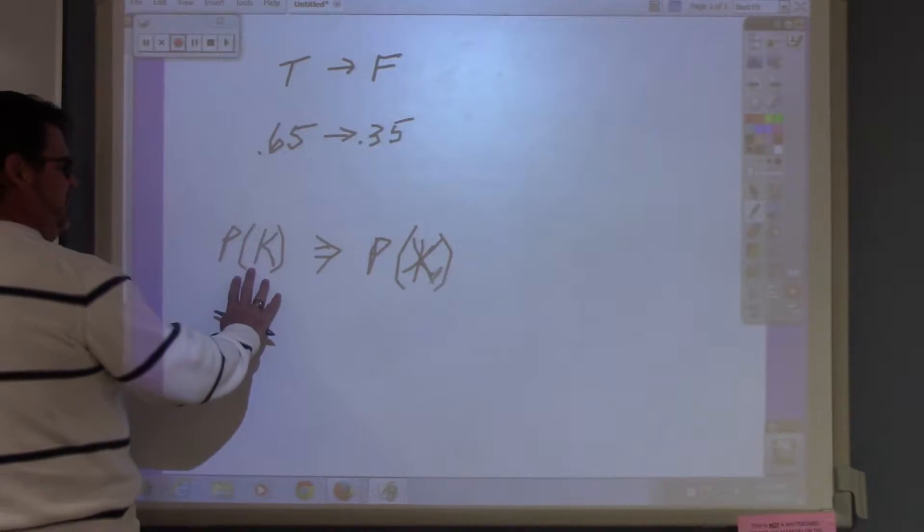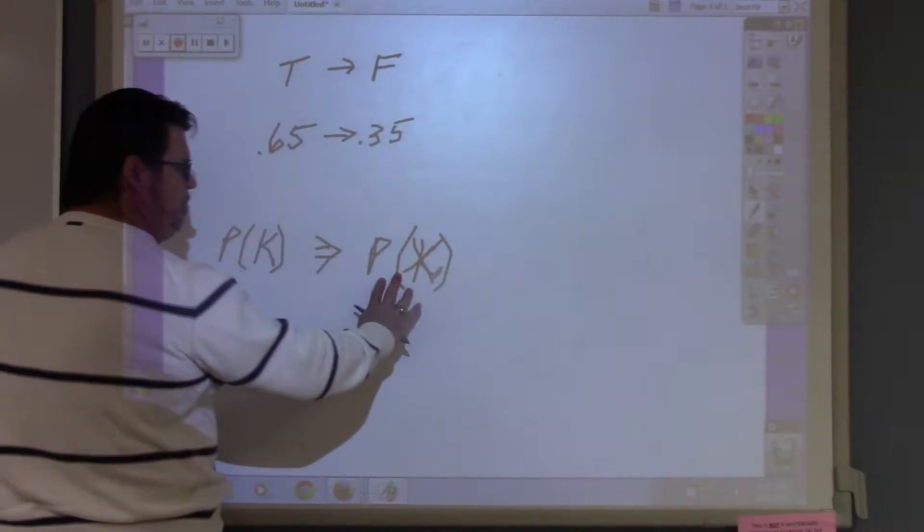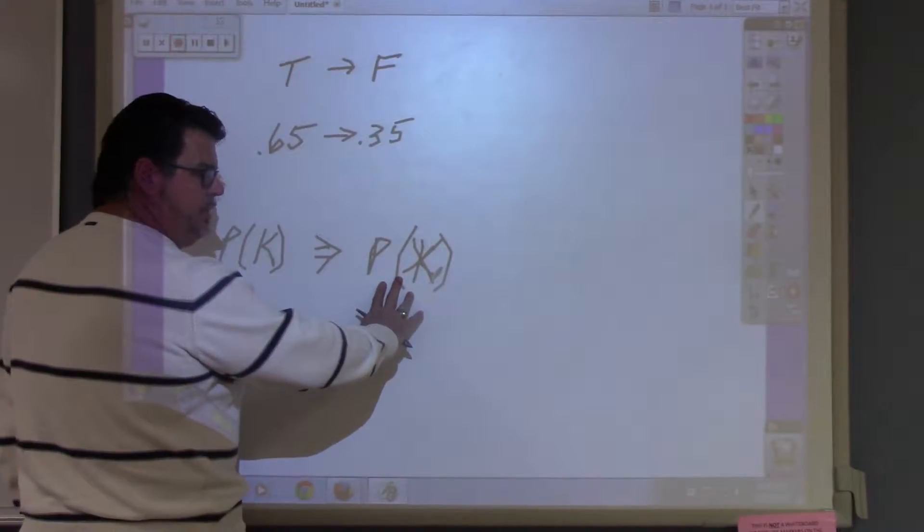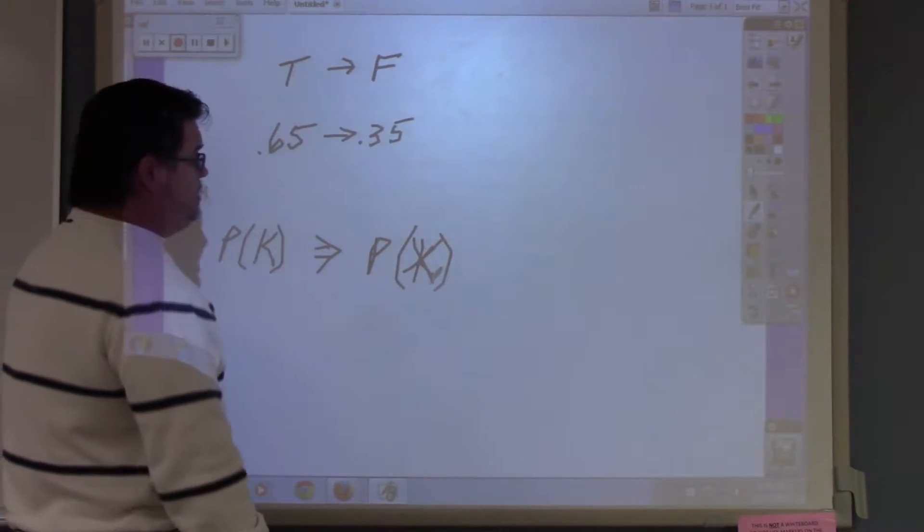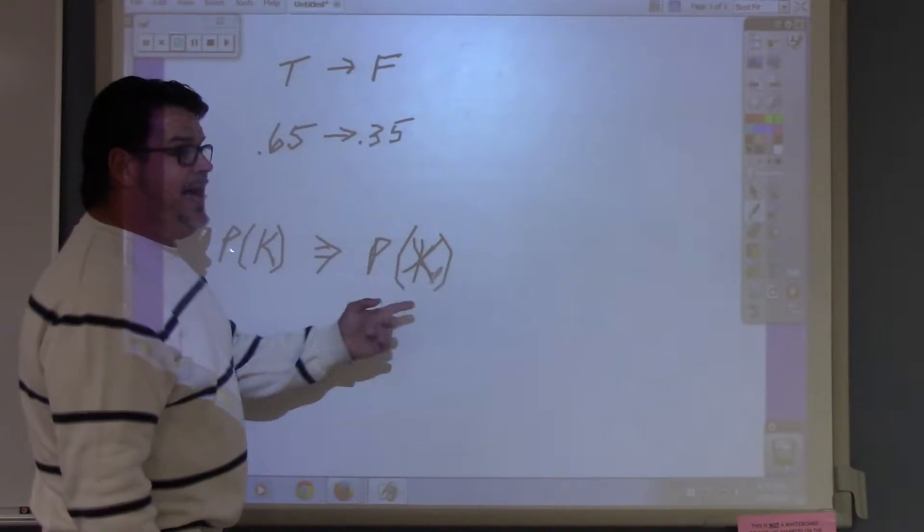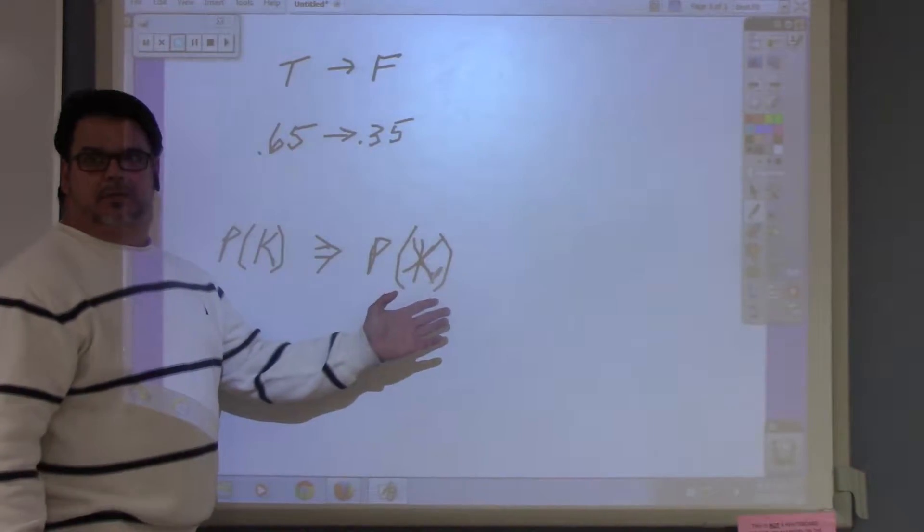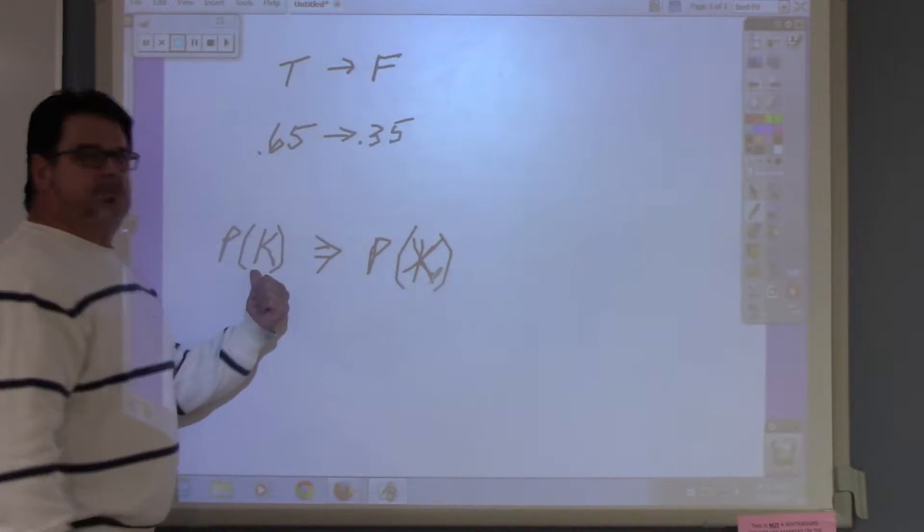The complement of the probability of drawing a king is the probability of not drawing a king. Some people may say, well, that's the probability of drawing a queen, a jack, a ten, an ace, a nine. Yeah, but you don't want to calculate all that. Just take this away from one.